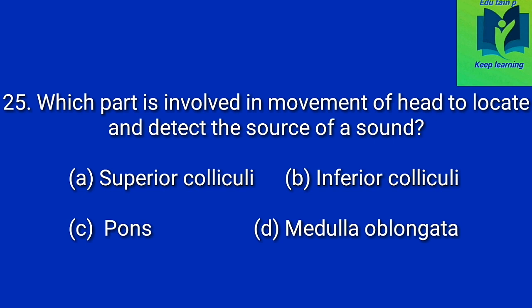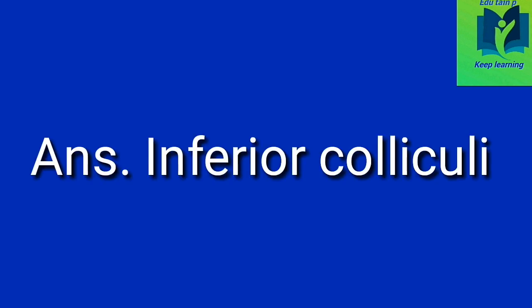Which part is involved in the movement of the head to locate and detect the source of a sound? Option A: superior colliculi. Option B: inferior colliculi. Option C: pons. Option D: medulla oblongata. Answer: inferior colliculi.